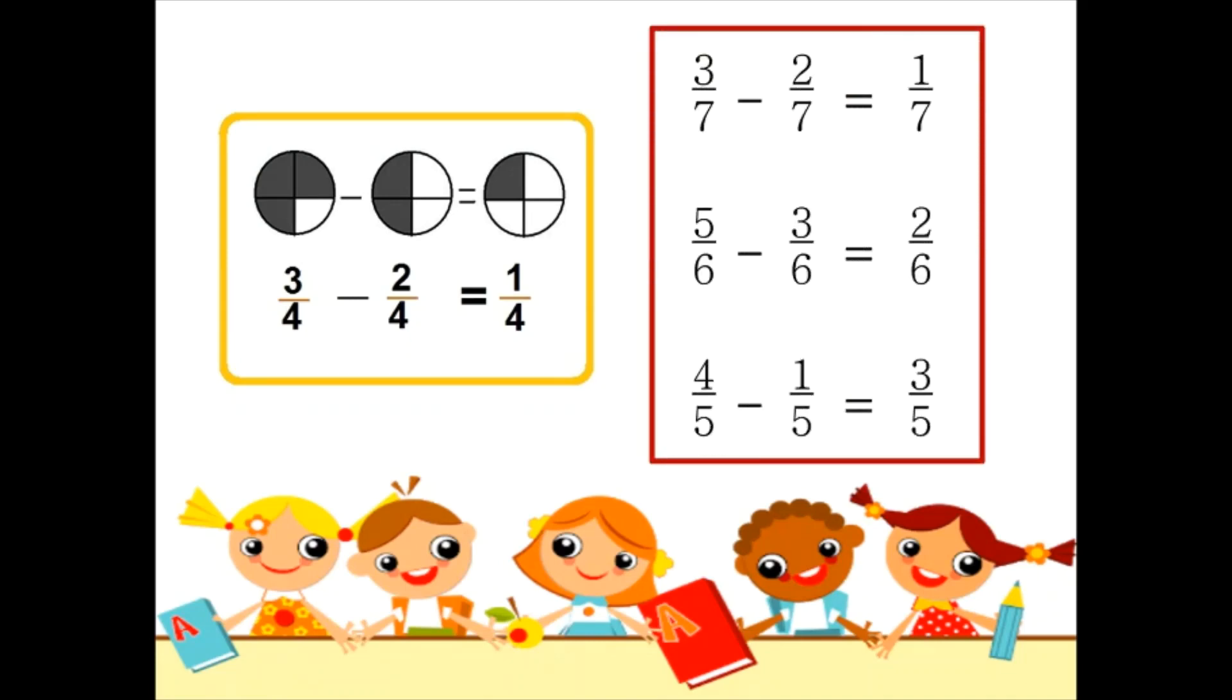Now look at these examples. 3 by 7 minus 2 by 7. So when the denominators are same, we need to subtract 3 and 2. 3 minus 2 is 1. The answer will be 1 by 7.